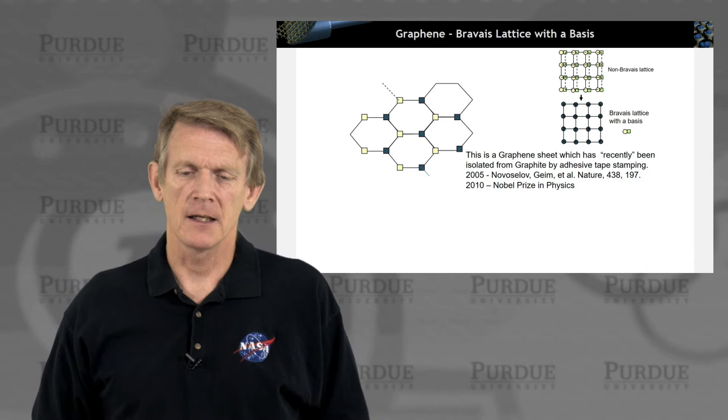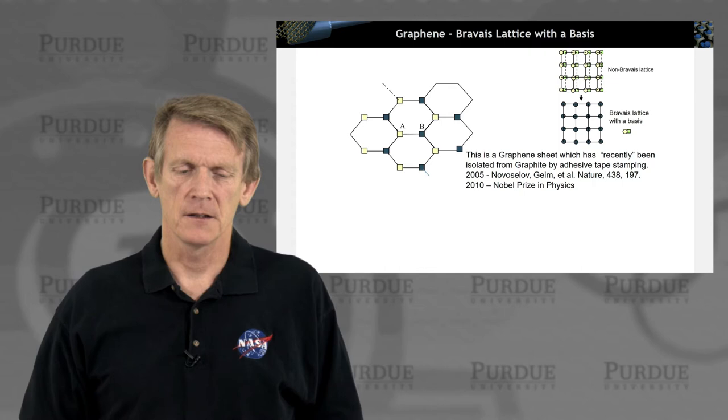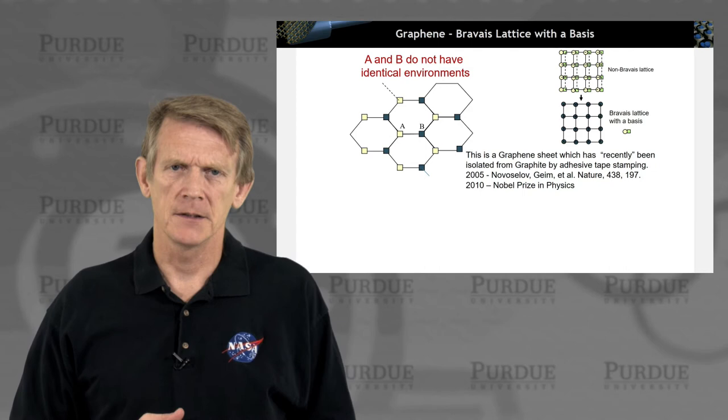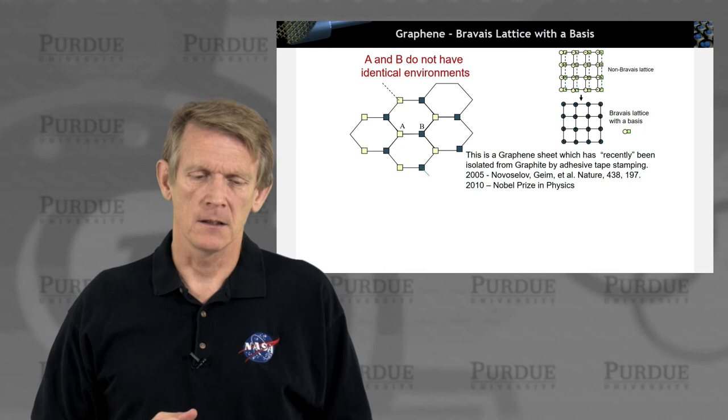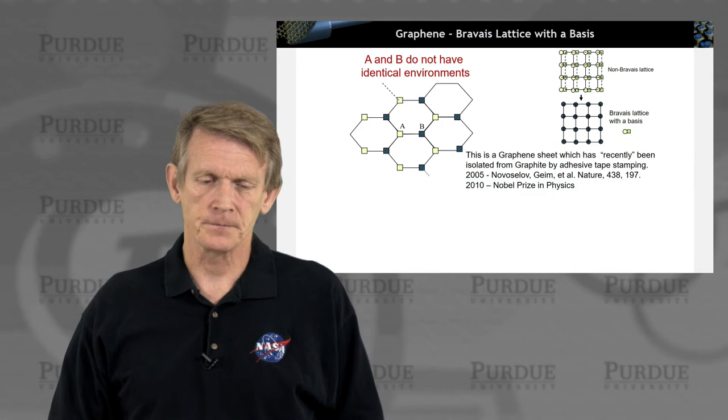All right, here's a pretty famous example of such a Bravais lattice with a basis. It's graphene. And if you look carefully, here you have atoms A and B. Of course, these atoms are all carbon.